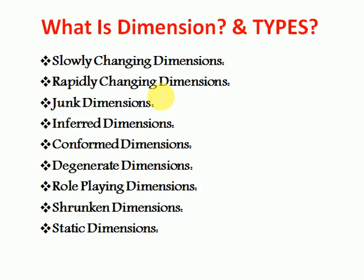So what does dimension mean exactly? Where you will have your business key information, that we will call as master data. Any table which has master data, that table we will call as a dimension table, and this table does not contain any aggregated or measures-related information. It will have only primary key business information, and the other sales or fact data will be maintained in child tables that we will call as fact tables.